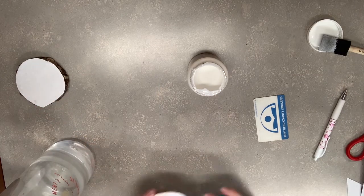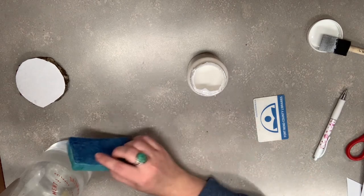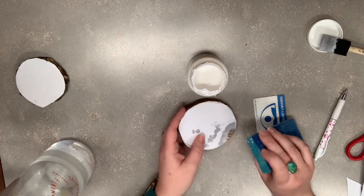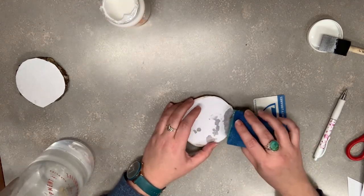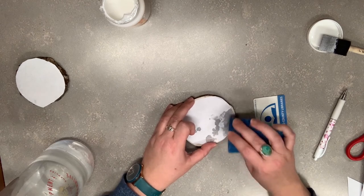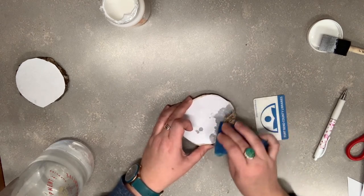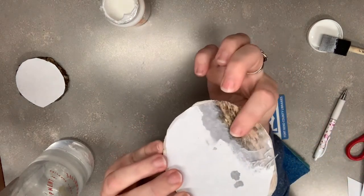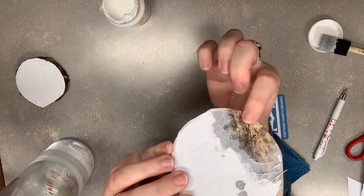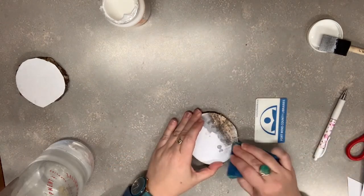So to remove the paper, you're going to take your sponge and get it wet and gently start rubbing the paper away. And make sure you're doing this gently, otherwise it could scratch. And see here, you can see the paper starting to rub away but leaving the image. So let's keep going.